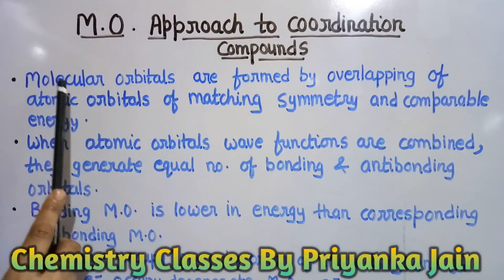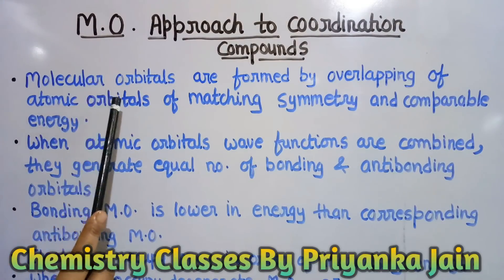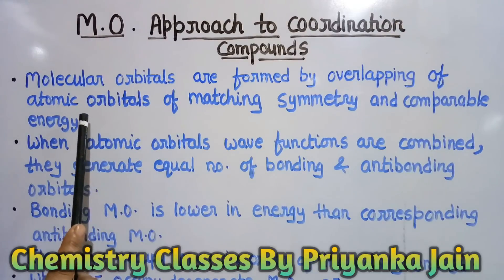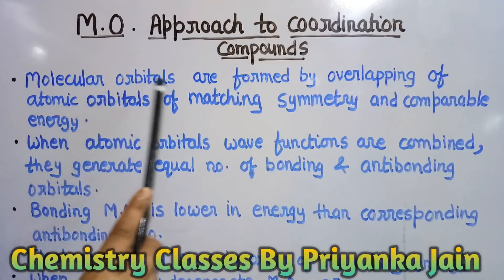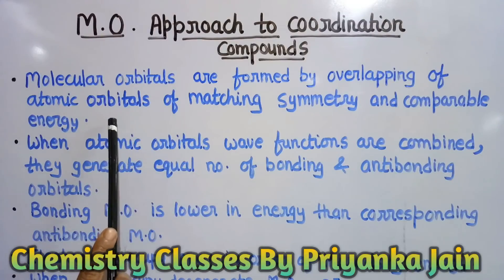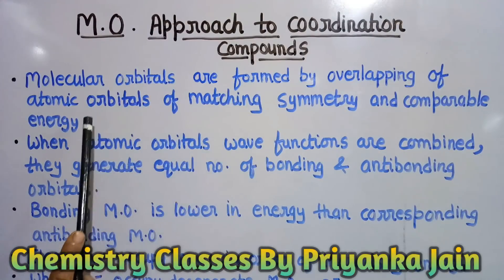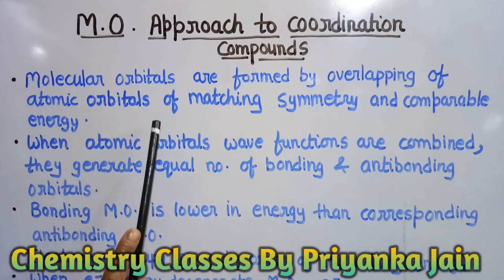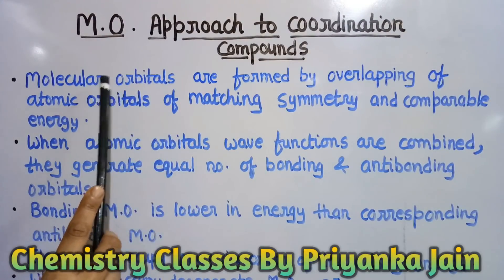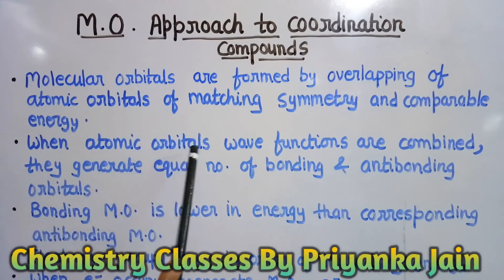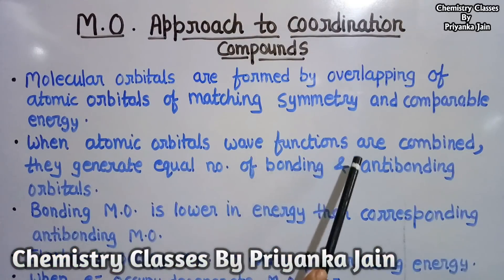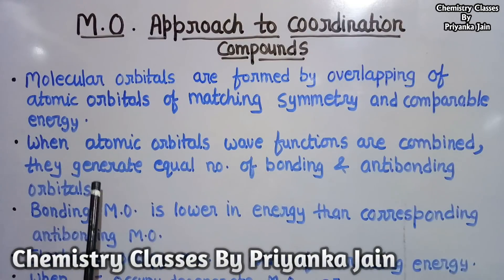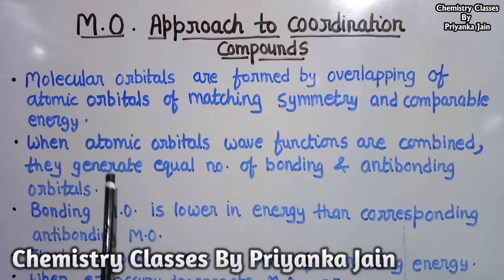Firstly, in order to understand the molecular orbital approach of coordination compounds, we should know the basics of molecular orbital theory. Molecular orbitals are formed by the overlapping of atomic orbitals that have matching symmetry and comparable energy. Such atomic orbitals combine and overlap to form molecular orbitals, generating an equal number of bonding and anti-bonding molecular orbitals. The total number of atomic orbitals and molecular orbitals remains the same.